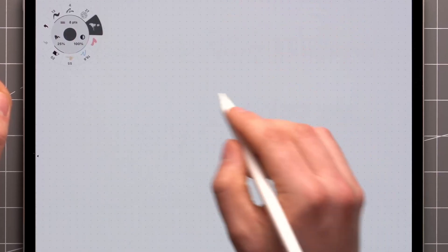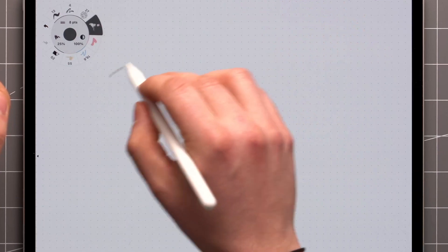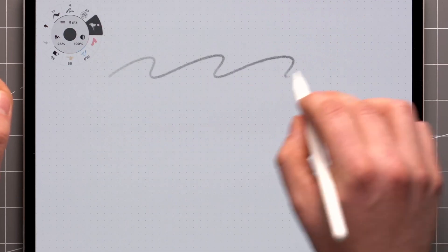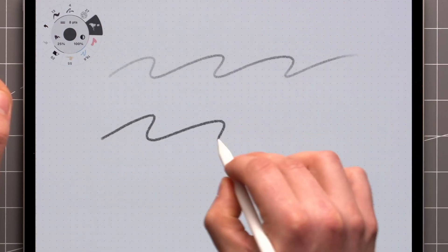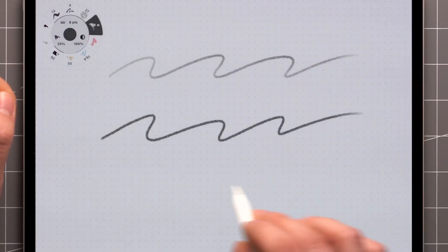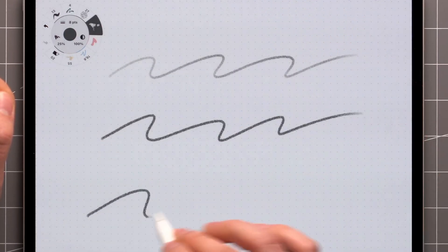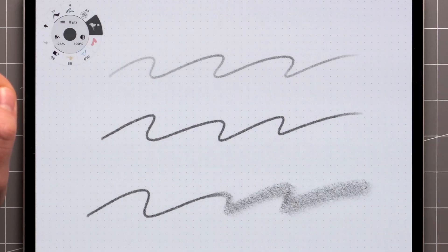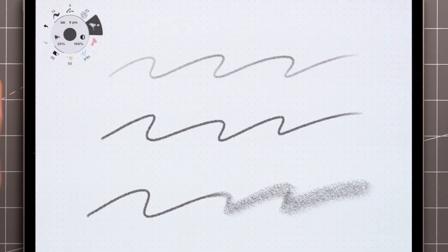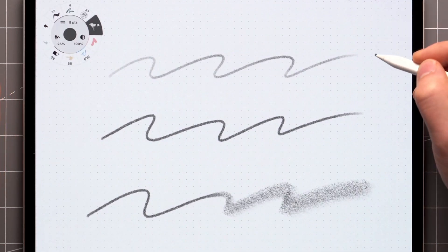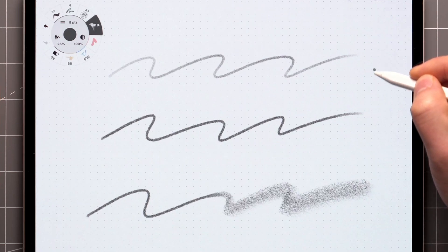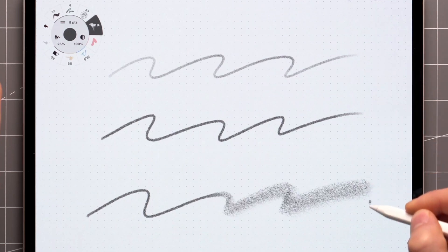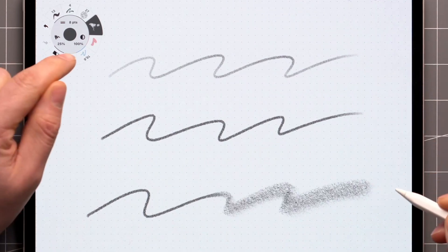Most brushes have other built-in dynamics as well. Just like a normal pencil would, the velocity, tilt, and pressure sensitivity of your stylus can affect the look of your line. Here I have the soft pencil, which is lighter at low pressure and wider when tilted.